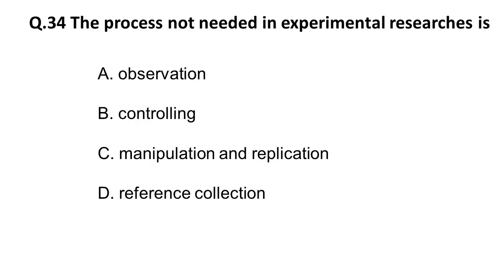The next question: the process not needed in experimental research is — option A is observation, option B is controlling, option C is manipulation and replication, option D is reference collection. In experimental research, the least required thing is reference collection, because in experimental research you can rely on your own data since it is produced by you yourself. The correct answer is reference collection.